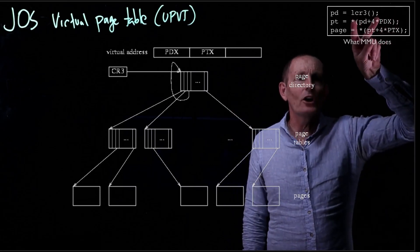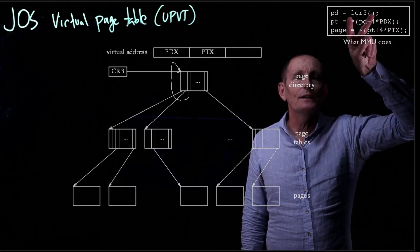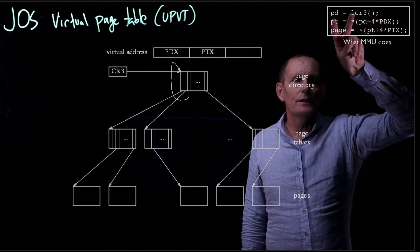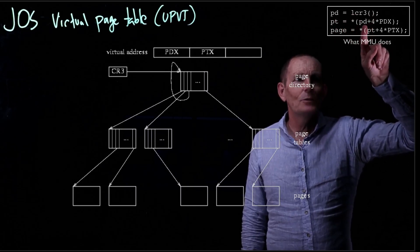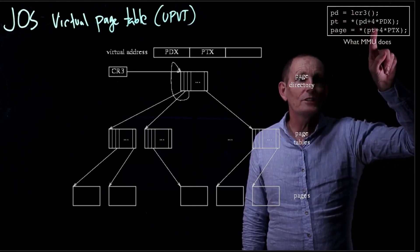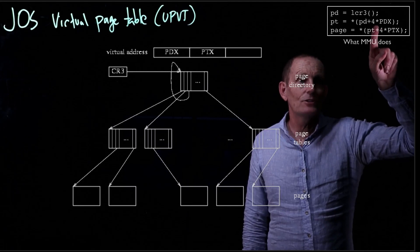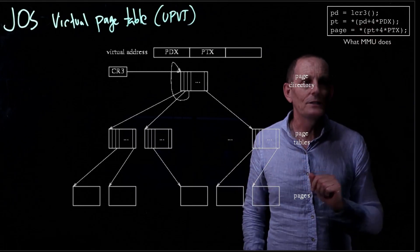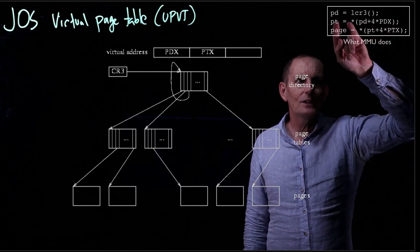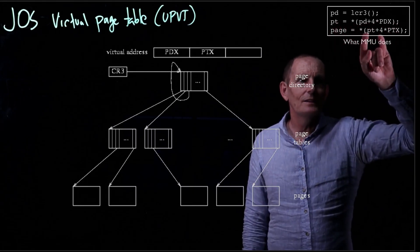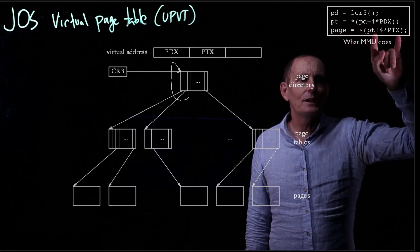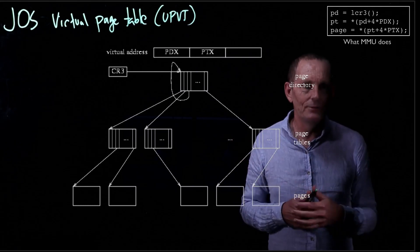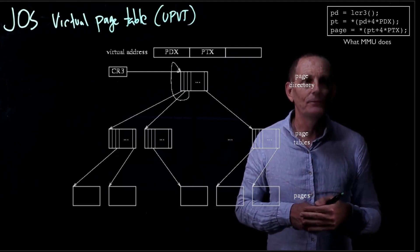So what happens is what the hardware effectively is doing is getting the CR3 register, right? And that's the page directory. And then it's basically taking the page directory and adding four times the page directory index of the address you're specifying. And then indirectly through there, ignoring the bottom 12 bits, setting those all to zero. And then that gives us the page table. And then it does the same thing with the page table. It has four times the page table index, indirectly through there. That gives us the page, right? And then we add in the offset from there or in the offset.